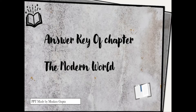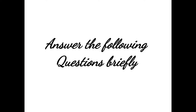Hello everyone. Today we are going to discuss questions and answers of Chapter 1, 'The Modern World,' from the book Cambridge Connection History and Civics. We will be answering the 'Answer the Following Questions Briefly' section. In the previous part I have done objective questions, so you can check it out — the link is in the description.